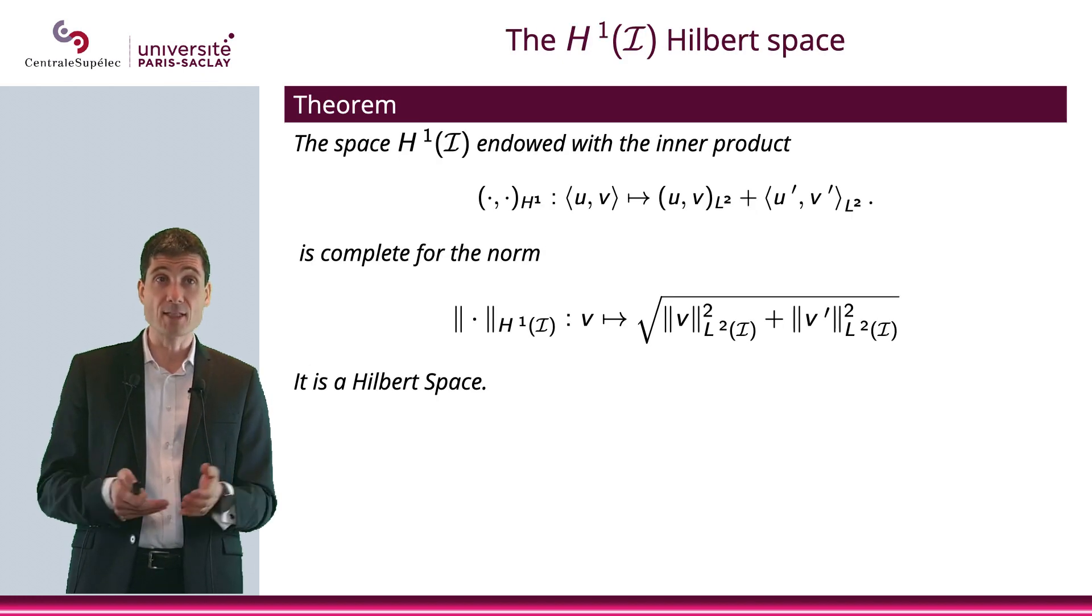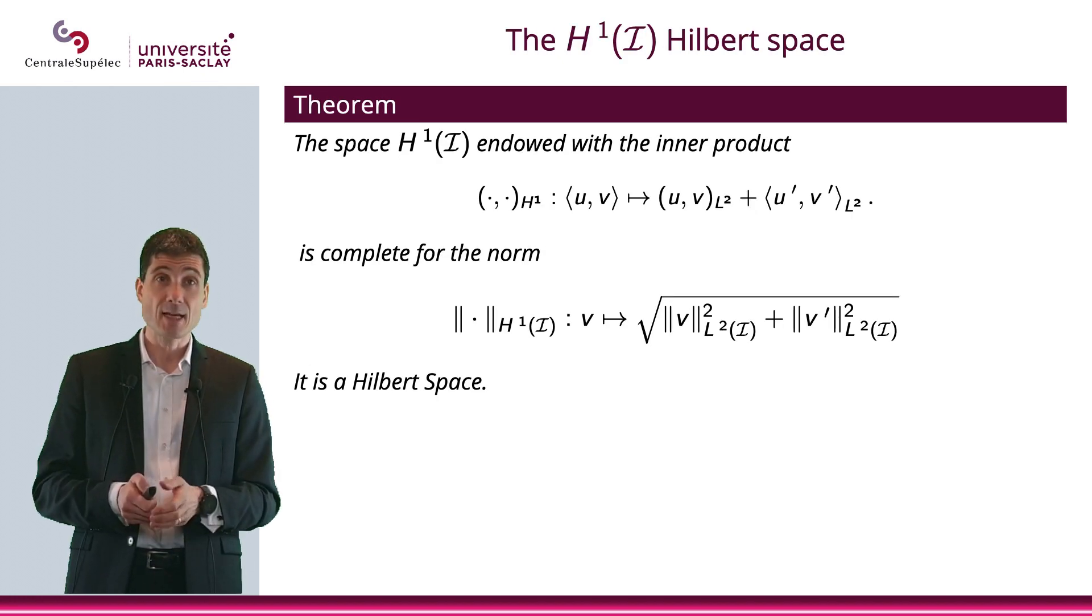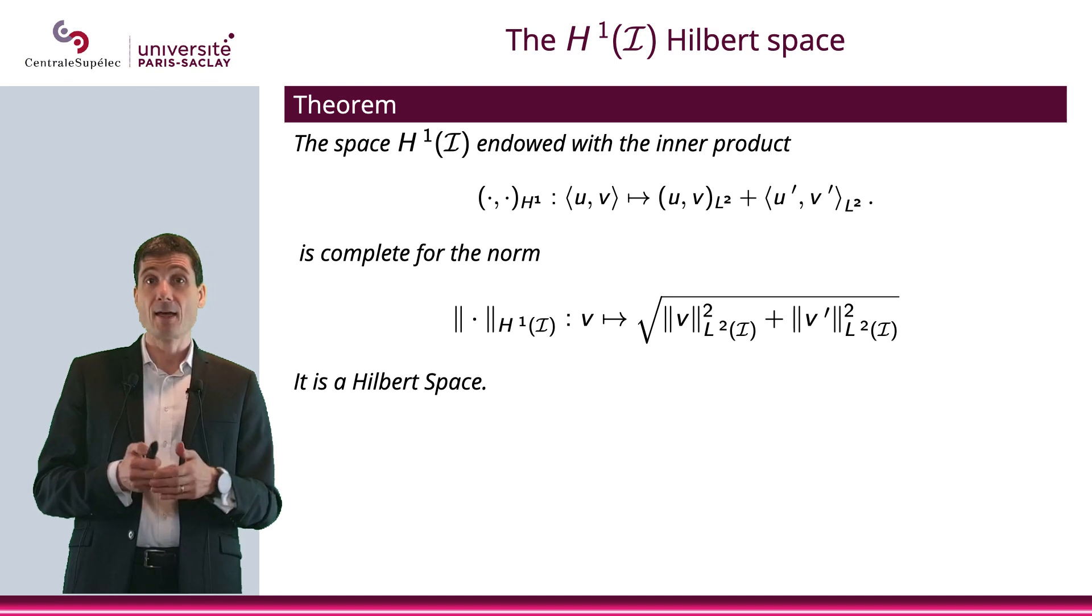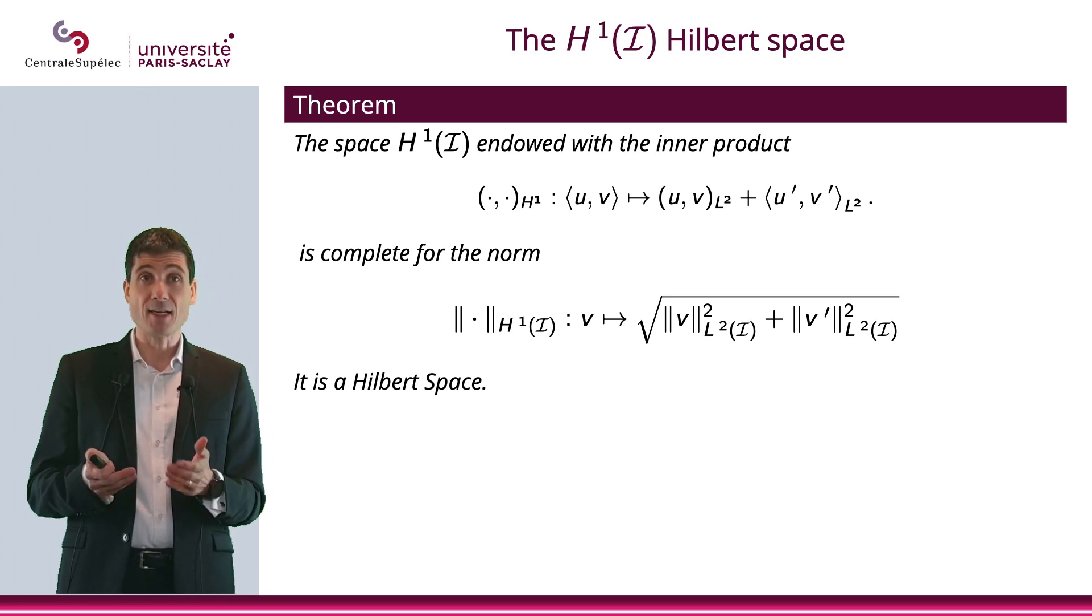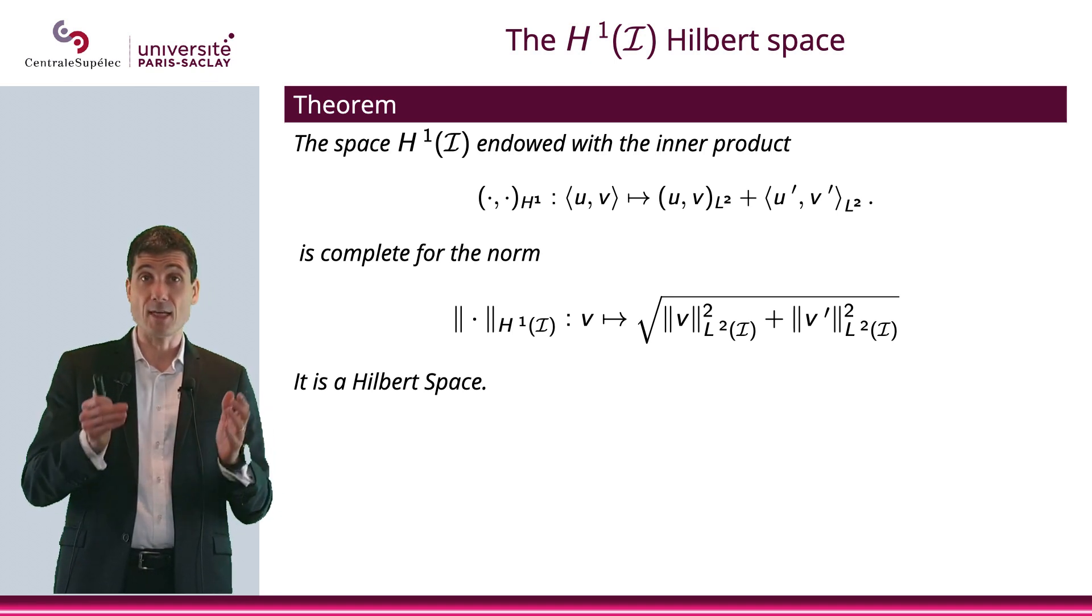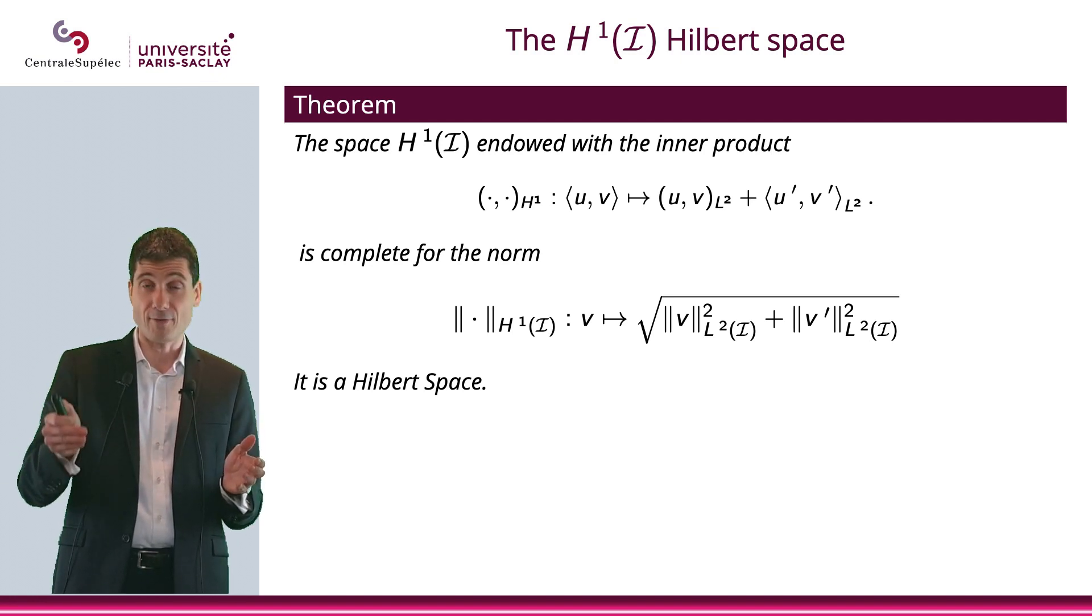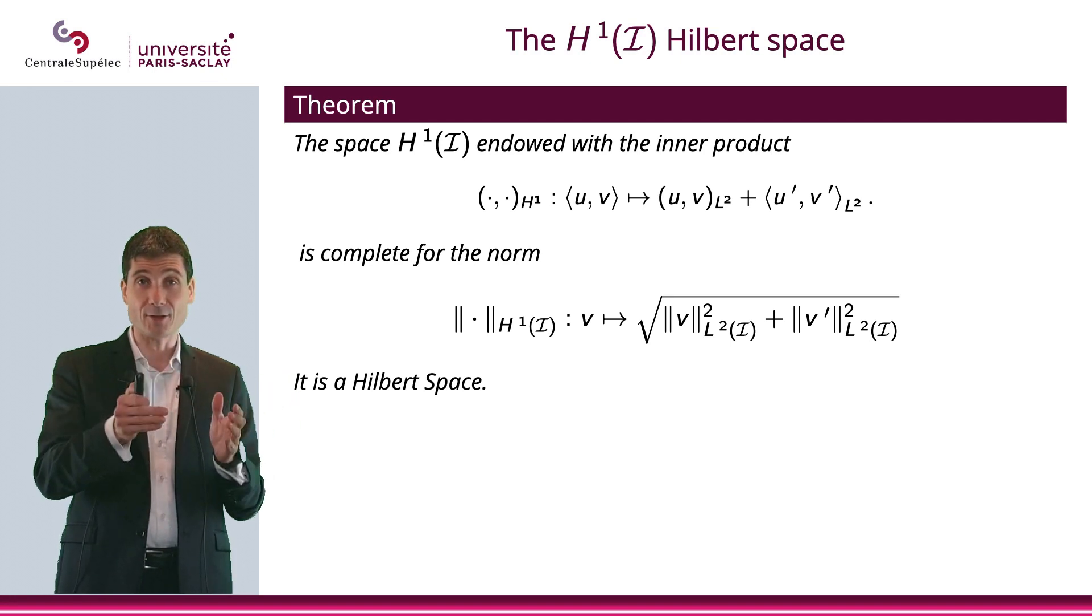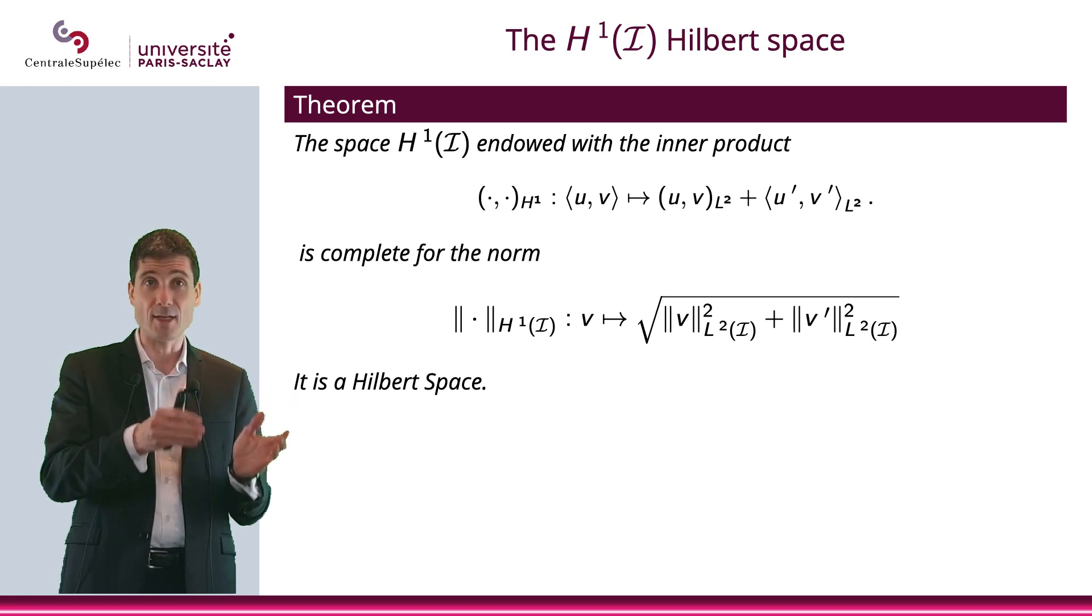Now, H^1 is obviously a linear space and it can be endowed with an inner product, making it a pre-Hilbert space. That inner product is simply the inner product in L^2 plus the inner product in L^2 of the derivatives. So it's (u,v) in L^2, the inner product in L^2 of u and v, plus the inner product in L^2 of u' and v'.